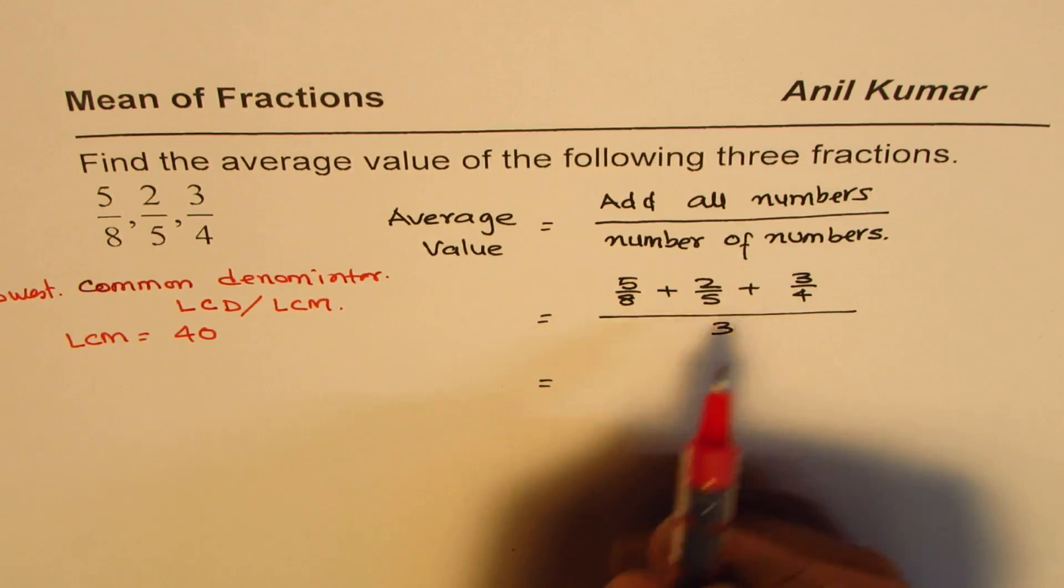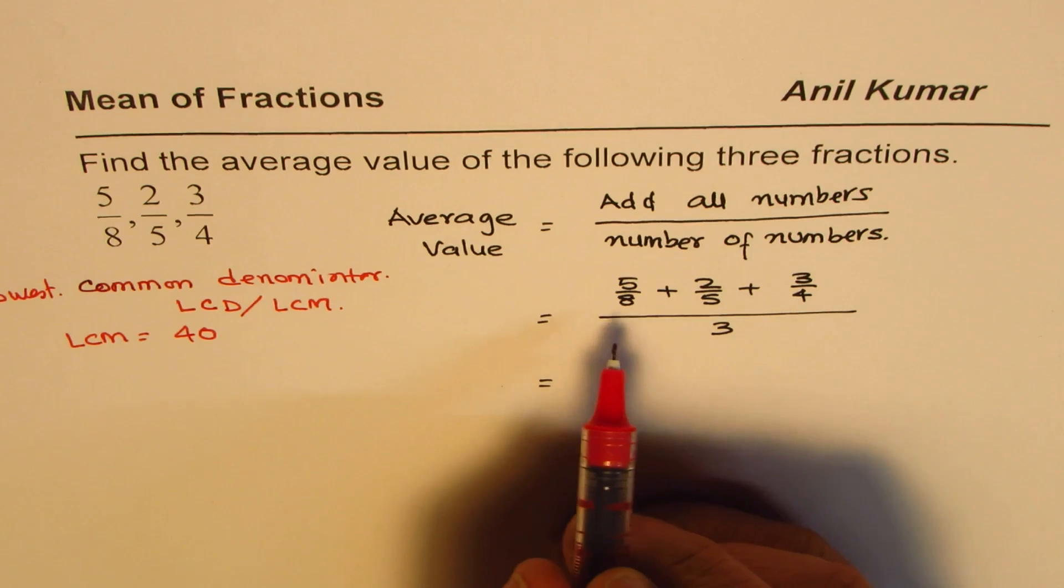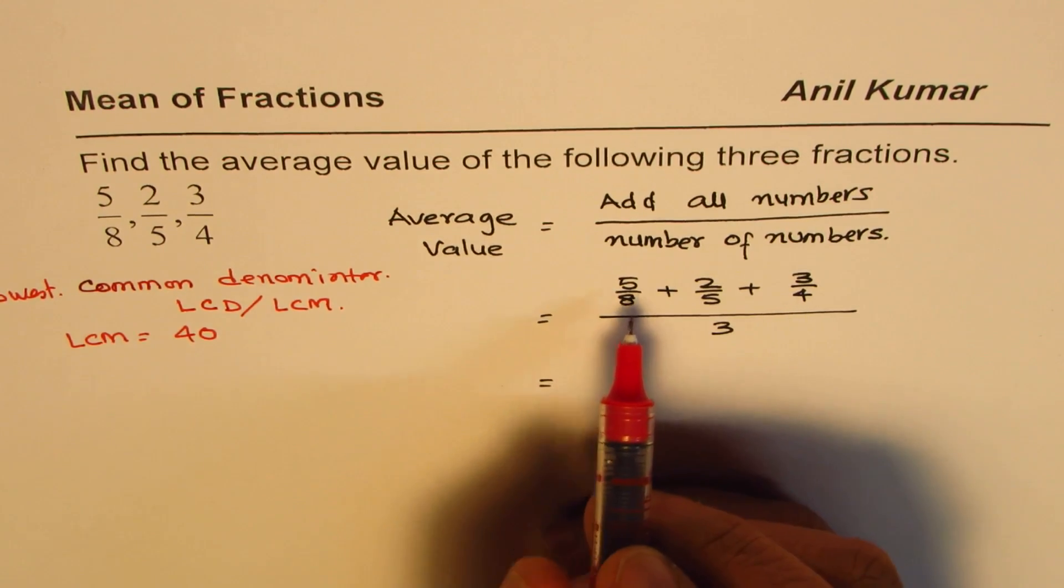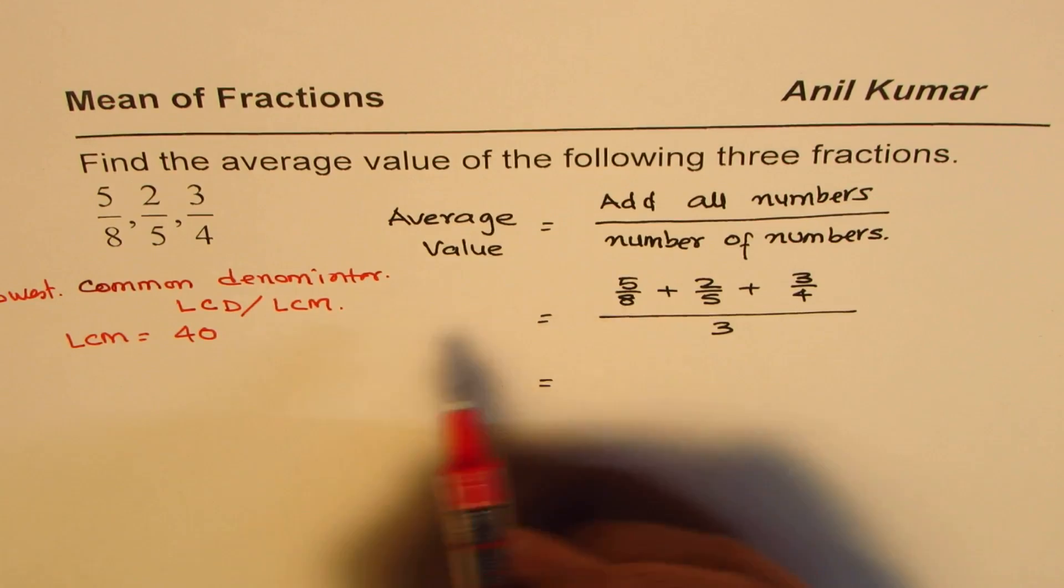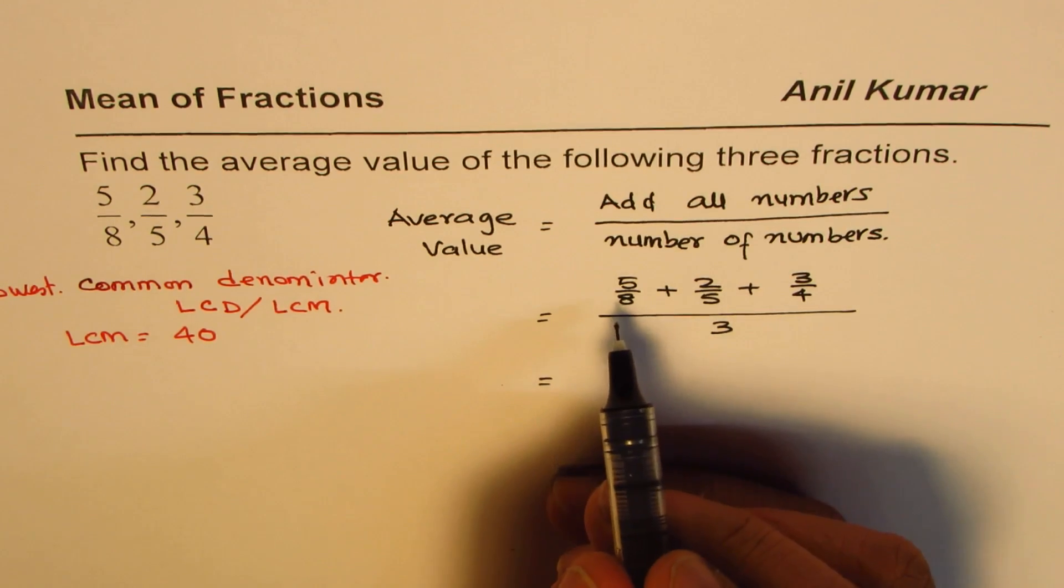So 40 is the lowest common multiple for these three numbers. So basically we need to ensure that all of them could be written as equivalent fractions with 40.